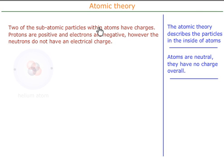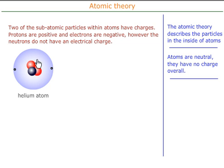Two of the subatomic particles have got charges. The protons are positive and electrons are negative. The protons are found in the nucleus. The electrons are found outside.